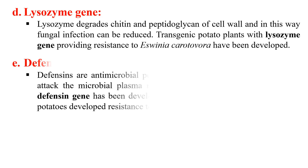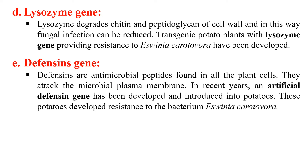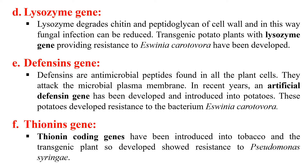Next, under pathogenesis-related proteins, is the defensin gene. Defensins are antimicrobial peptides found in plant cells that attack the plasma membrane of microbial pathogens and kill them. If we transfer the genes for these defensin proteins, we can make our plant resistant to pathogens. An artificial defensin gene was developed and introduced into potatoes, and those potatoes were resistant to the bacterium Erwinia carotovora. Additionally, the thionine protein also provides protection against bacteria — a thionine-coding gene introduced into tobacco produced transgenic plants with resistance against Pseudomonas syringae.